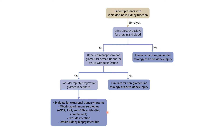Perform autoimmune serology: ANCA, ANA, and anti-glomerular basement membrane antibodies. You must exclude infection, both because you will be starting immunosuppressors and because infection may present with a vasculitis-like picture. Finally, obtain a kidney biopsy if feasible.